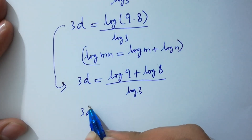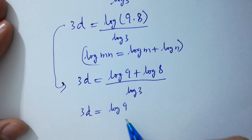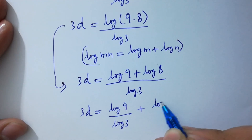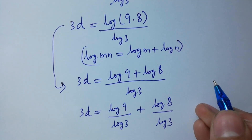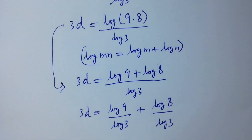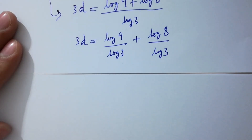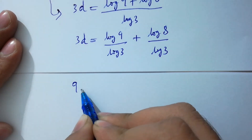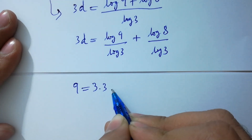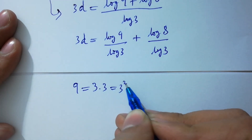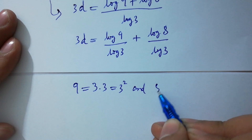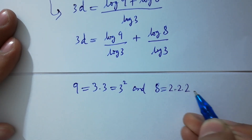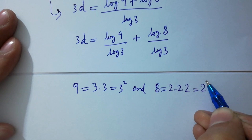So 3d equals log 9 over log 3 plus log 8 over log 3. In the next step, since 9 equals 3 times 3 which is 3 squared, and 8 equals 2 times 2 times 2 which is 2 cubed.